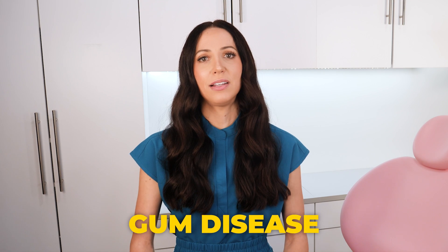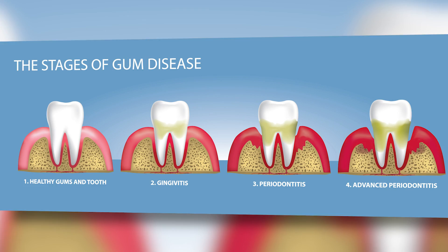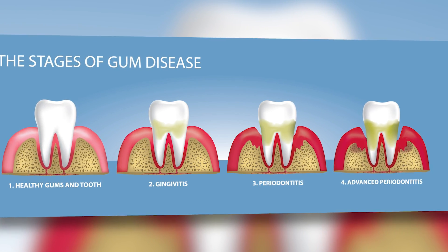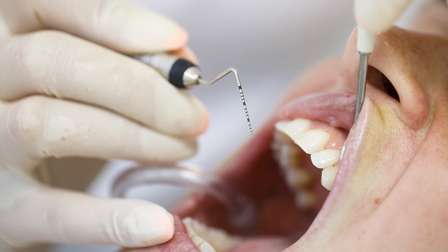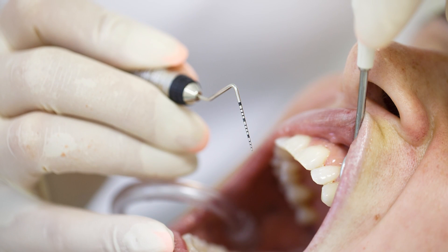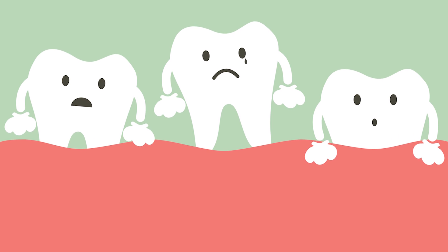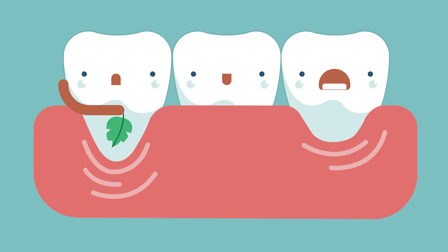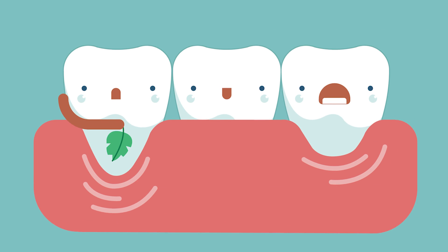It's important to know that gum disease has a range of different stages, from mild to severe, and it takes some time. It's different for everyone, depending on the level of pocketing underneath the gums, the level of bone loss deterioration, whether or not tooth mobility is present — whether the teeth are wiggly — or if structural damage is present.